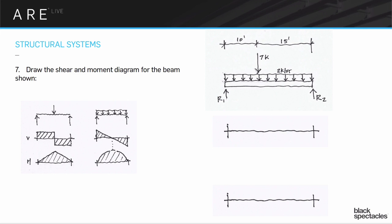We're stepping back to some statics discussions. Draw the shear and moment diagram for the beam shown. I've got two reactions, a uniform load across the entire beam, and a point load coming down — that's seven kips. I've got some numbers but I don't really care about the numbers; you don't need them to draw the shear and moment diagrams.